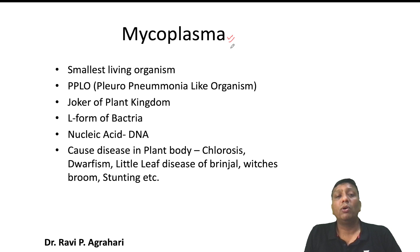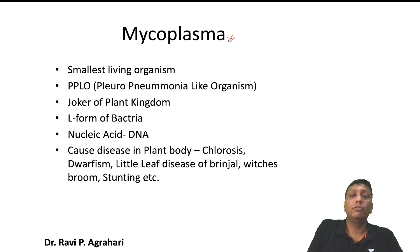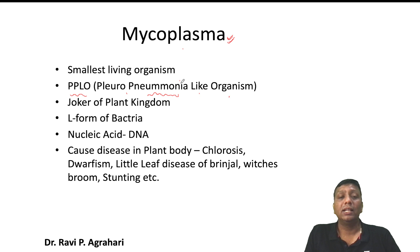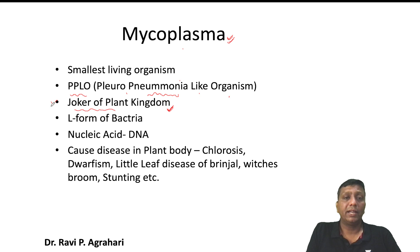What is mycoplasma? Mycoplasma is the smallest living organism in the world — among all plants, animals, and microorganisms, mycoplasma is the smallest. Mycoplasma is also called PPLO — Pleuropneumonia-Like Organism. These bacteria are responsible for causing pneumonia; the appearance of mycoplasma resembles that, hence the name. Mycoplasma constantly changes shape, size, and structure, which is why it is also popularly called the 'Joker of the plant kingdom.'